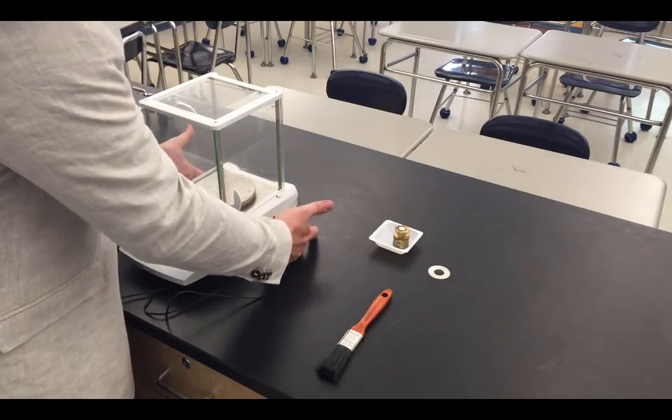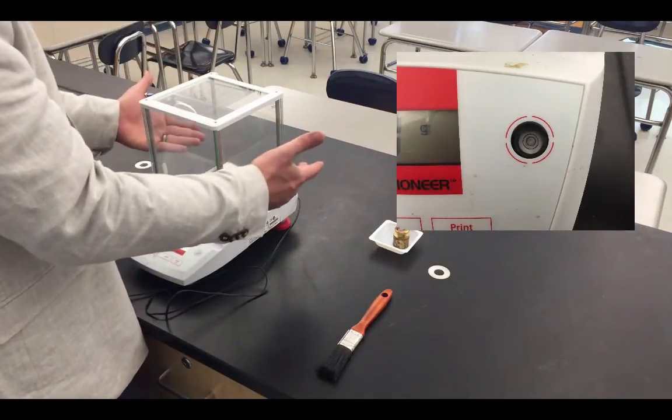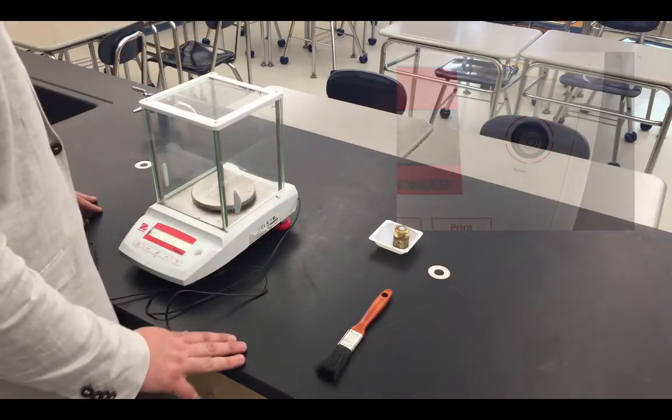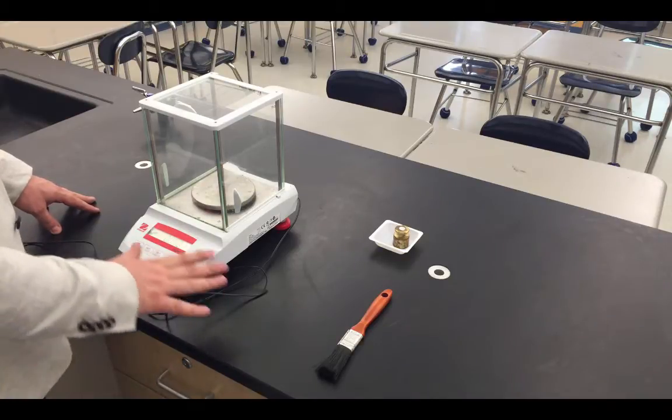To adjust whether or not the balance is level, we can turn the feet towards the back of the balance, which raises up the different sides of the balance until the balance is properly leveled. Once it's leveled, we'll hit the tear button one more time and that'll get us back to 0.00.